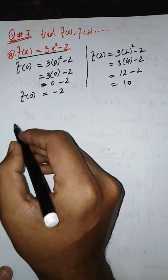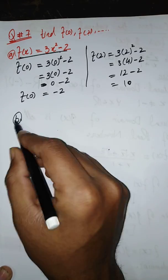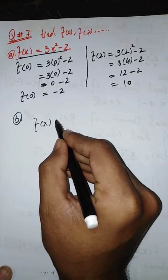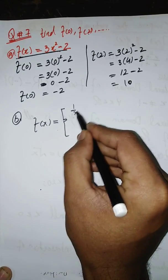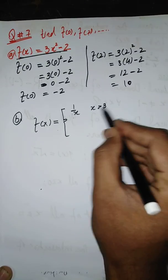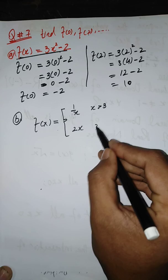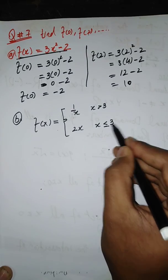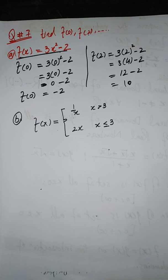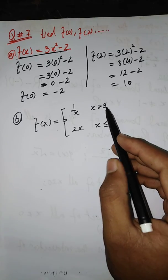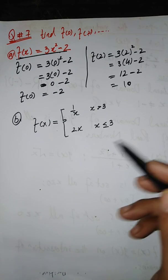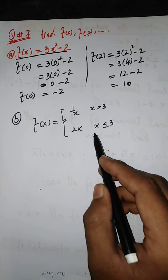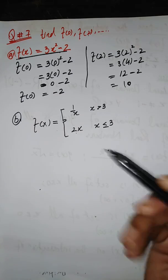Similarly, for part B, we have a piecewise function: f(x) = 1/x for x greater than or equal to 3, and f(x) = 2x when x is less than or equal to 3. Whenever we put a value greater than 3, we take f(x) = 1/x, and whenever the input is 3 or less, we take f(x) = 2x.